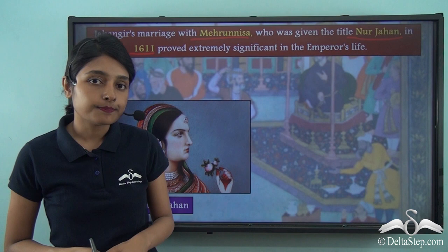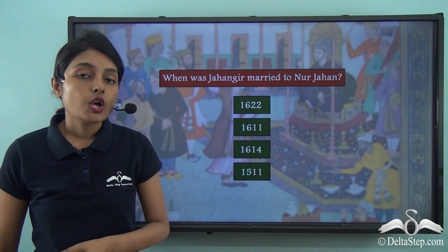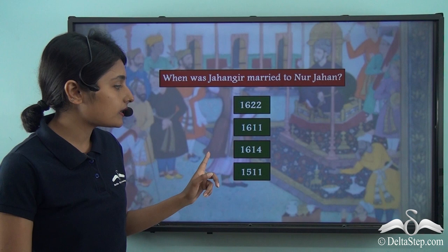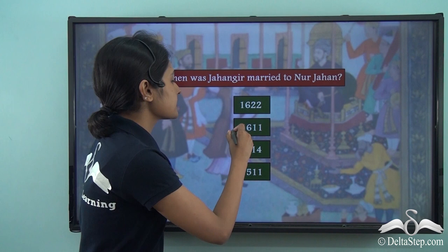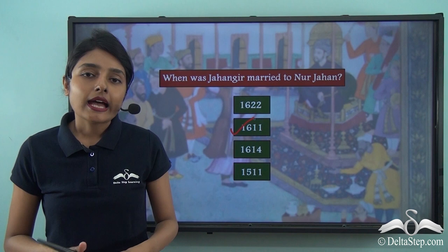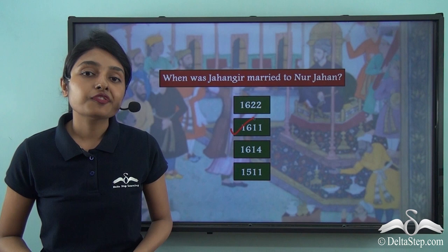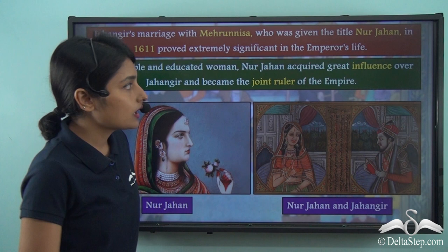A quick question: when was Jahangir married to Nur Jahan? The correct answer is 1611. Jahangir married Mehrunissa, who was later given the title Nur Jahan, in 1611. This marriage proved very crucial and decisive in the life and career of Jahangir.